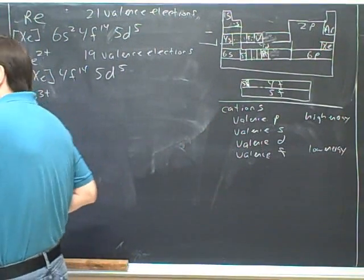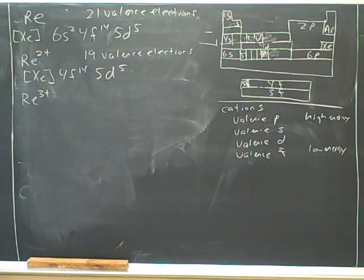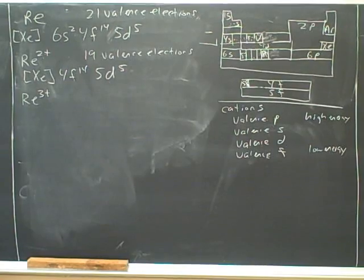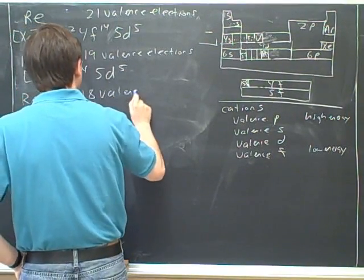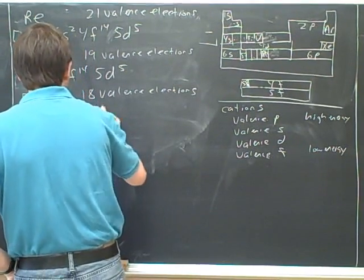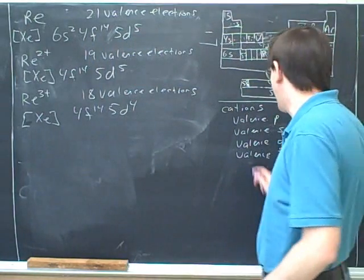One more example: Rhenium-3 plus. What would be the electron configuration for Rhenium-3 plus? How many valence electrons does this cation have? If you start from the bottom up, you would put 14 electrons in the F block, because that's the lowest. And then there are four electrons left over for the D block. That's how you do it in the bottom-up method.